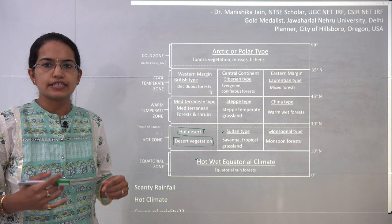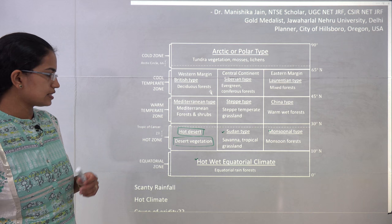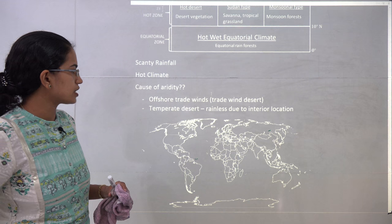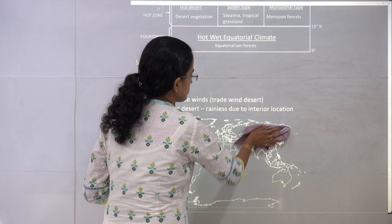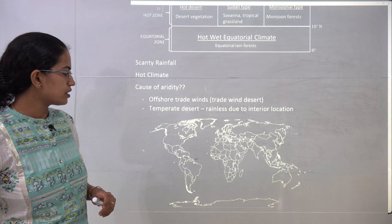This region lies below the Tropic of Cancer and between the equatorial zone. So after the equatorial zone up to the Tropic of Cancer you have the hot desert. The key characteristic is there is less rainfall, and why there is aridity is very important. The root cause of aridity is the offshore trade winds that blow here. Also the temperate deserts are dry due to their interior locations. The climate and the vegetation are the two major things we would be covering today, along with lifestyle.